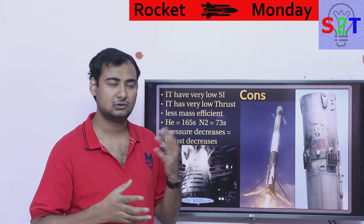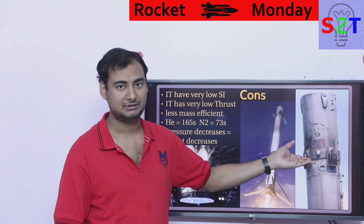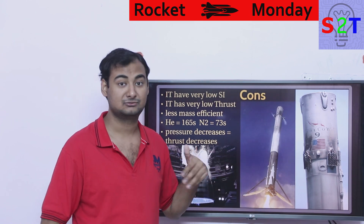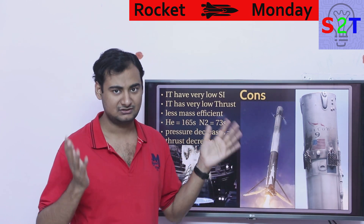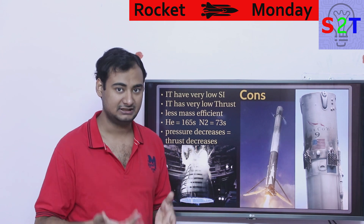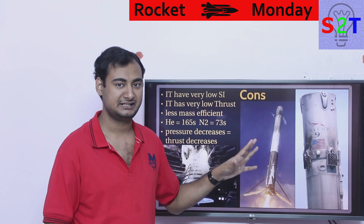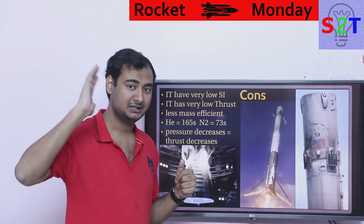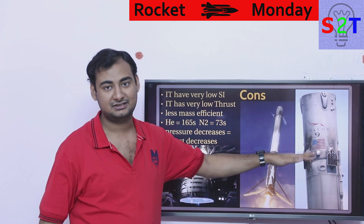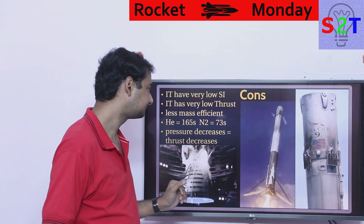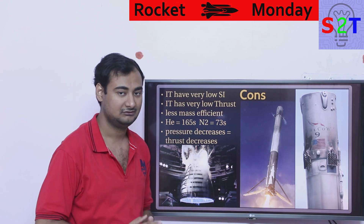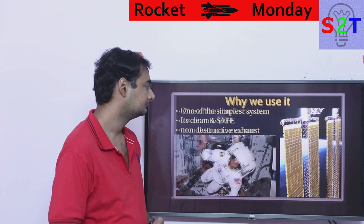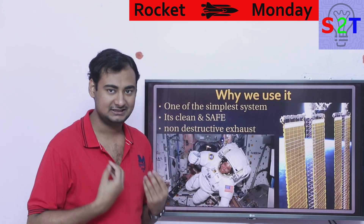It's just not a very efficient system. If cold gas thrusters had anything close to normal RCS thrust, Falcon 9 would not need grid fins at all. But because they're weak, once the rocket touches the atmosphere the grid fins take over. It's flat out not powerful, nor efficient.